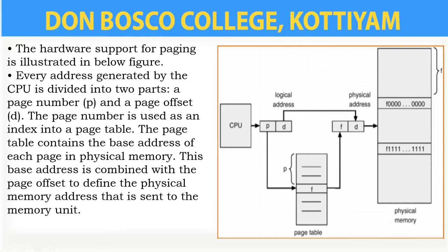Every logical address generated by the CPU will have two parts: that is the page number and a page offset value.